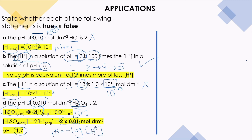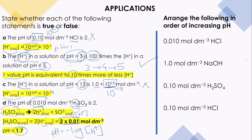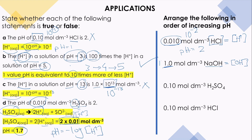Arrange the following solutions in order of increasing pH. First, HCl: it's a strong acid, so [H⁺] = [HCl] = 0.01, which is 10 to the power negative 2, giving pH = 2. Next, NaOH: it dissociates to give OH⁻. The concentration is 1, which is 10 to the power 0, so pOH = 0 and pH = 14.